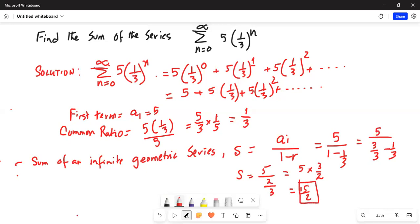This is your final answer. Okay? 5 times 3 is 15 divided by 2.